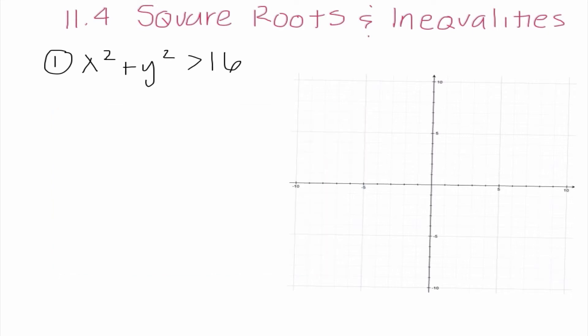Okay, problem number one here, we have x² + y² > 16. Now, if this was just an equation, we could definitely see that this is a circle, because we have both x² and y², they're added together, and they have the same coefficient. The only thing that is different from our normal circle equation is the fact that this is not an equation. It is an inequality.